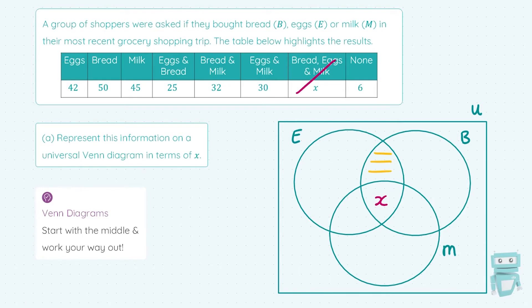Moving to the two-way intersections, I'll look at the eggs and bread only region. From the table, 25 people bought eggs and bread, so that entire intersection must add up to 25. However, there's already X people in there from the middle. So for the eggs and bread only part, I do 25 minus X. That fills out the eggs and bread region.